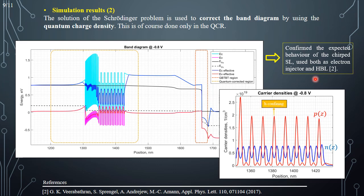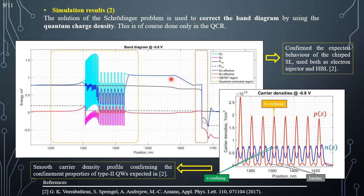This represents the whole confining layer of this specific Type-II quantum well. These are the electron confining layers and these are the barriers. The charge profile is smooth and confirms the confinement properties of Type-II quantum wells, where the peaks of the hole concentration do not correspond to the peaks of the electron concentration.